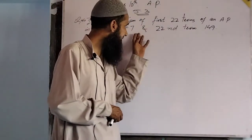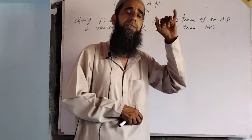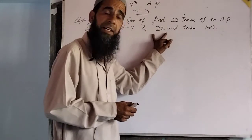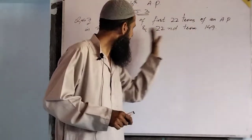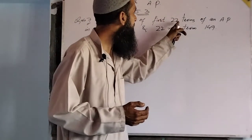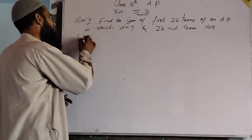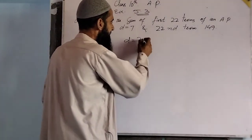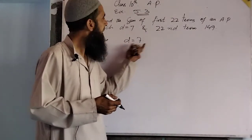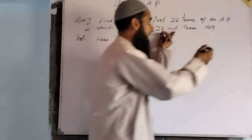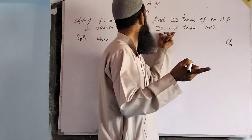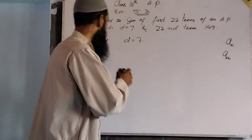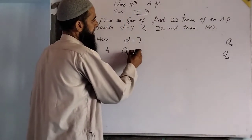The given conditions are: common difference d is equal to 7, and the 22nd term a₂₂ is equal to 149. We have to find the sum of the first 22 terms of this particular arithmetic progression.